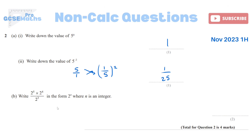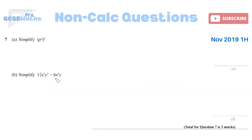Part B: 2 to the power of 5 times 2 to the power of 4, over 2 to the power of 3, to be written in the form 2 to the power of n. When multiplying with the same base number, you add the powers: that gives 2 to the power of 9 in the numerator, still over 2 cubed. When dividing with the same base number, you subtract the powers, giving 2 to the power of 6.